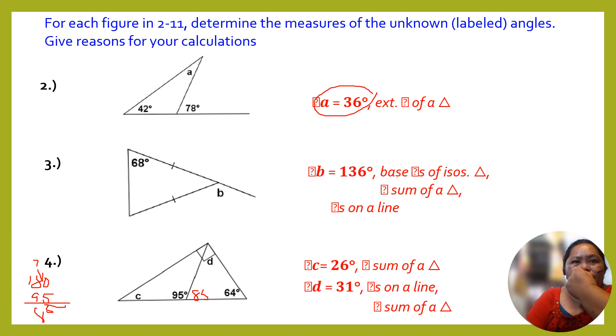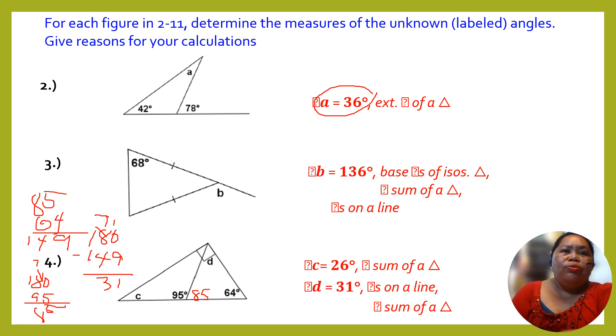Now if this is 85, so this is 85. 85 plus 64. We have 149. That means 180 minus 149. So we got a 10, we have 1, and this is 7. Then this will be 3. Your answer is 31. It's correct. If this is 31, you subtract here. This is the right angle. So 90 minus 31, then you get c which is 26.